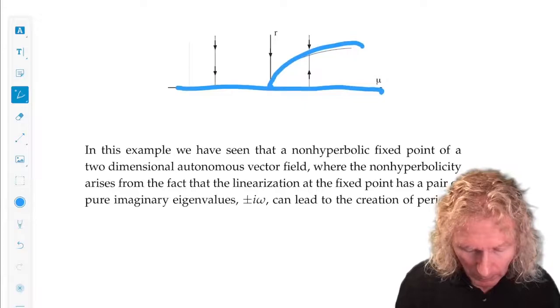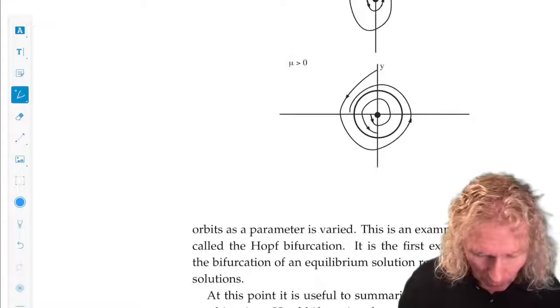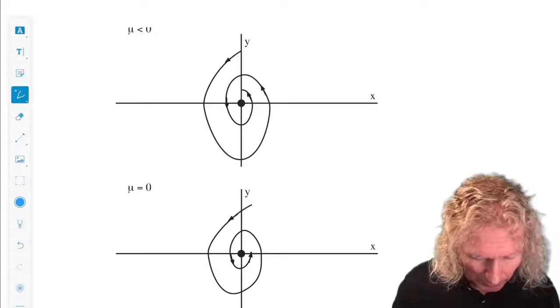Okay, this is for a less than zero. And we can draw the trajectories for mu less than zero. Trajectories spiral into this stable fixed point.